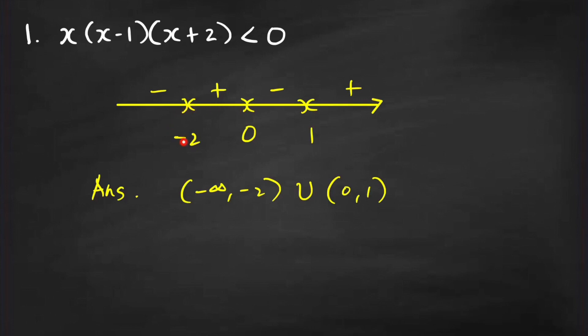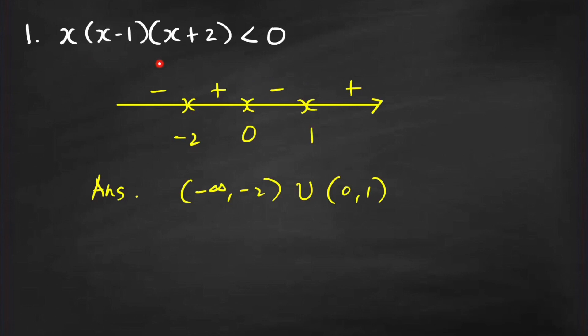Note that the scaling of the real line is incorrect, but in solving polynomial inequalities using this method — called the sign diagram or sign graph method — you only need to make sure that the zeros of the polynomial on the left, which are 0, 1, and negative 2, are arranged in increasing order from left to right. We use these zeros to divide the real line into open subintervals, and the signs over the real line are the signs of the values of the polynomial.